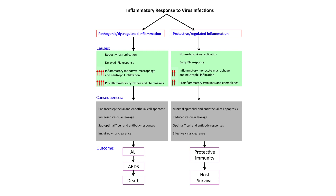As more and more cells get infected, cytokine generation increases grossly, resulting in more macrophage and neutrophil recruitment. This causes damage to the epithelium and endothelium by apoptosis, increased vascular leakage from cytokines and chemokines, a suboptimal T-cell response, and impaired virus clearance. The cytokine response ultimately results in acute lung injury and ARDS.